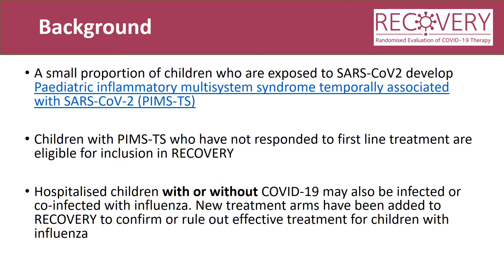A small proportion of children who are exposed to SARS-CoV-2 go on to develop paediatric inflammatory multi-system syndrome temporarily associated with SARS-CoV-2, or PIMS-TS for short. Children with PIMS-TS who have not responded to first-line treatments are eligible for inclusion in the recovery trial. Hospitalised children with or without COVID-19 may also be infected or co-infected with influenza. New treatment arms have been added to recovery to confirm or rule out effective treatment for children with influenza as well.